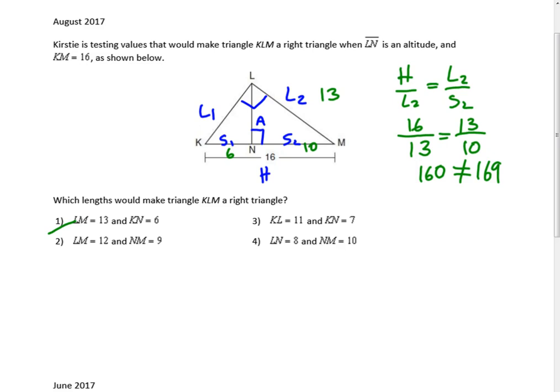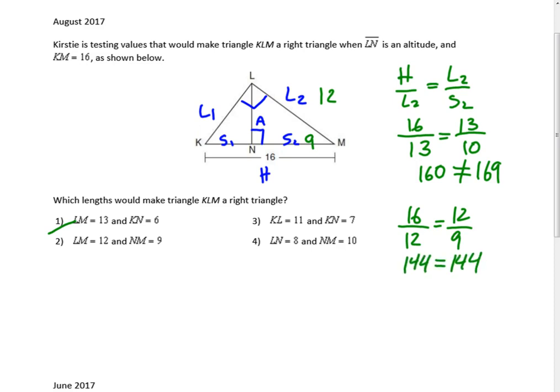For option 2, let's make LM equal to 12 and NM equal to 9. Does 16 over 12 equal 12 over 9? 16 times 9 is 144, and 12 times 12 is 144 — so that satisfies the proportion. A little thing to watch out for is that sometimes you may have to add values together to get the hypotenuse, or subtract to get one of the sides given the hypotenuse. But this is a very popular question type related to hills and sass: a right triangle with an altitude drawn to the hypotenuse.